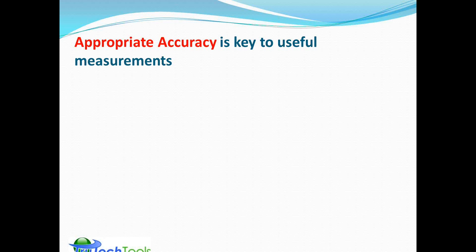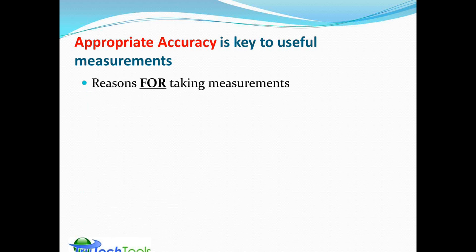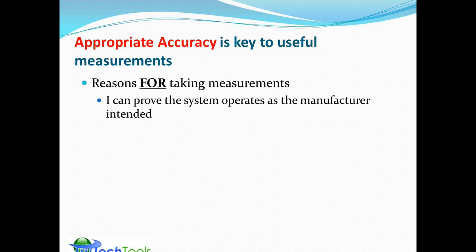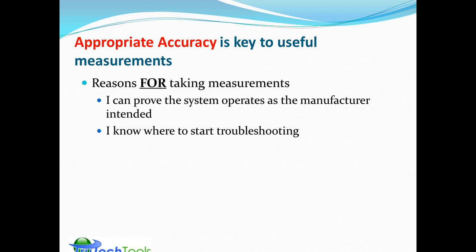There are various means and methods of measuring airflow, and appropriate accuracy is key to useful measurements. Reasons you might measure include: proving the system operates as the manufacturer intended, conducting a capacity test in BTUH or cooling tons, developing a troubleshooting baseline to detect duct leakage, coil bypass, dirty blower wheels, or open filter slots, and confirming that adjustments actually had an impact on the measurement.